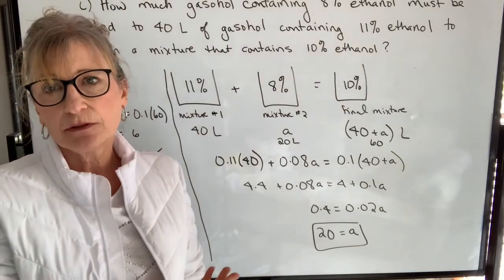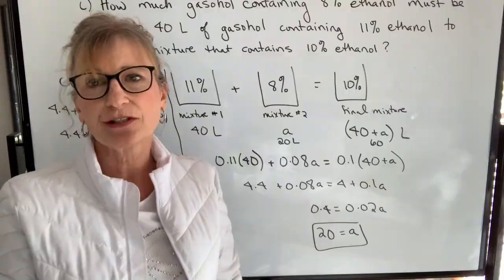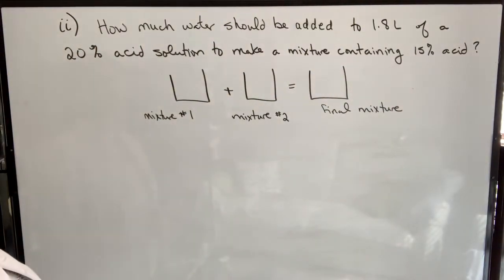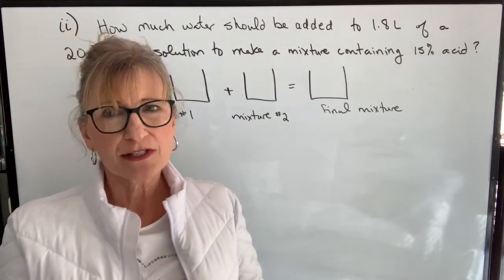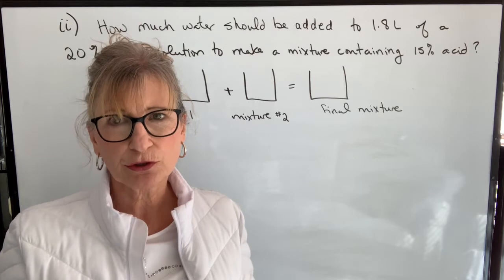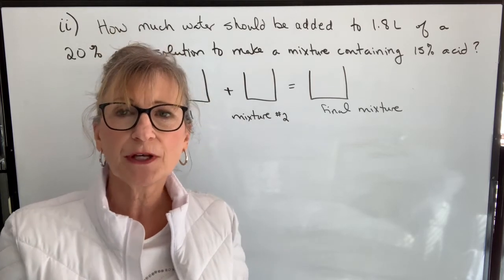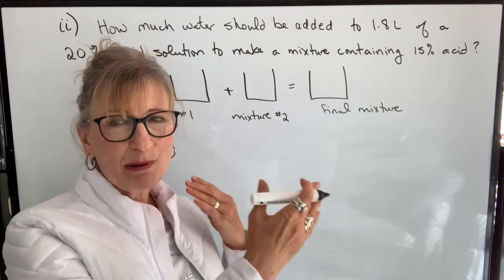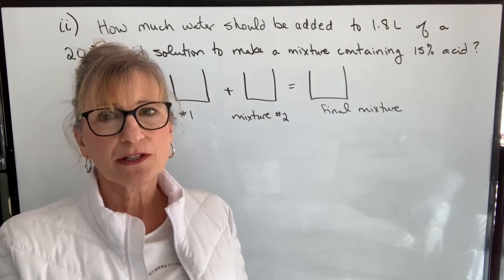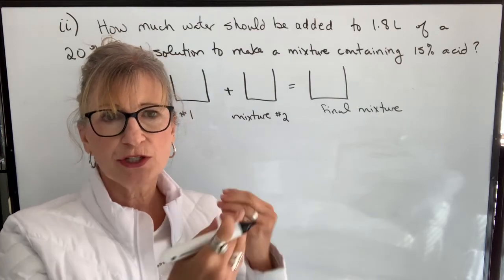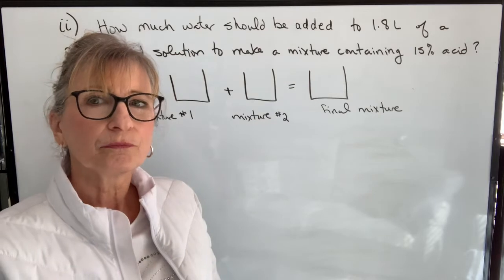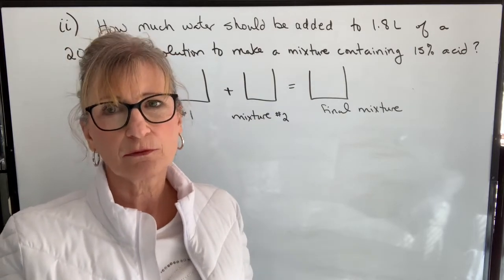That's the pattern I'll typically use for mixture questions. This next problem asks: how much water should be added to 1.8 liters of a 20% acid solution to make a mixture containing 15% acid? In this question there is a changing-concentration formula a person could use, but I want to set it up using the same pattern I've introduced, because you're not always going to be adding water — this method works regardless of what kind of question you encounter.